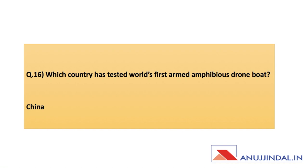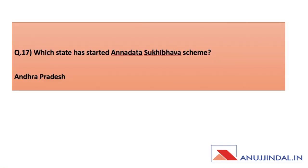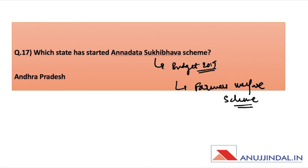Which country has tested the world's first armed amphibious drone boat? The name of the drone boat is Marine Lizard, and China is the answer. Which state has started the Rythu Sarana Sakthi scheme? It was in the Andhra Pradesh state budget 2019, related to farmers' welfare. The answer is Andhra Pradesh.